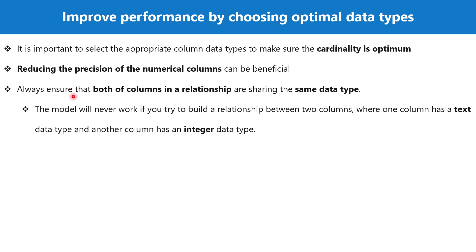Another thing to keep in mind when setting data types is that columns used in relationships must have the same data type on both sides of the relationship. The best practice is to use ID columns — primary key and foreign key — set to a numeric value for best compression. This is also critical because if the columns on each side of a relationship have different data types, the relationship will not work. For example, if you have a text data type in one table and an integer data type in another and try to build a relationship between them, the data model will never work.